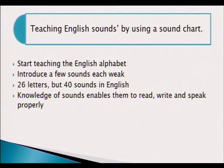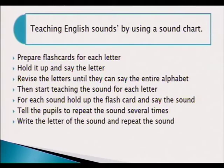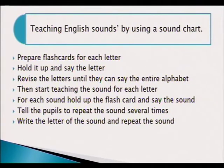Start teaching the English alphabet first — make sure your children know the letters of the alphabet. Introduce a few sounds each week after they have learned the letters. There are 26 letters but 40 sounds in English. The knowledge of sounds enables them to read, write, and speak properly. Prepare flashcards for each letter — hold it up and say the letter. You have a flashcard of, for example, the letter A, and you hold it up for your children to pronounce it. Revise the letters until they can say the entire alphabet, then start teaching the sound for each letter.